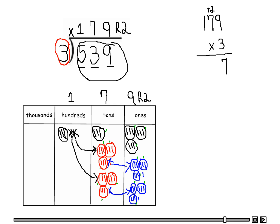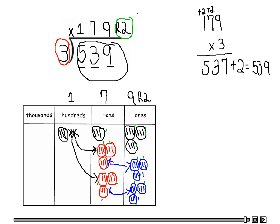Seven times three is 21, plus two is 23 — carry the two to the hundreds. Three times one is three, plus two is five. Don't forget our remainder of two, so 537 plus two equals 539. This proves that my answer is correct: 179 with a remainder of two.